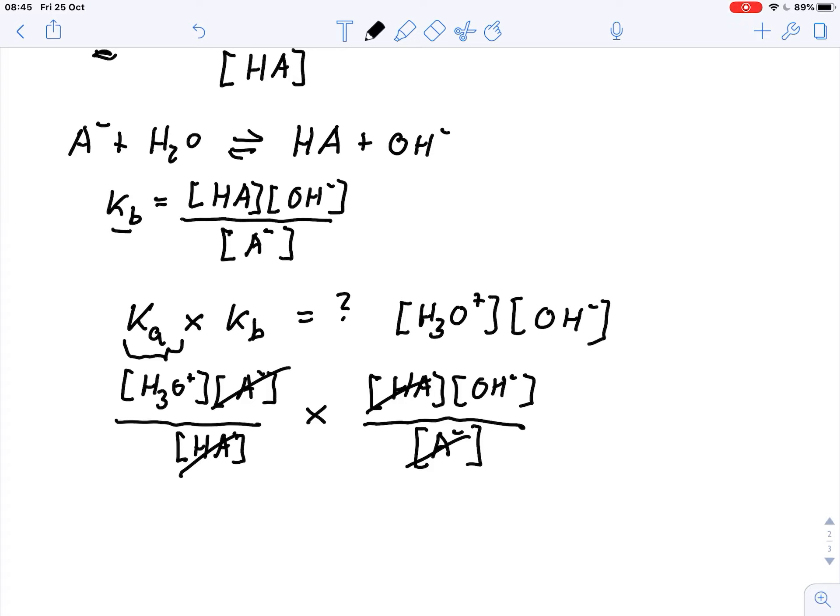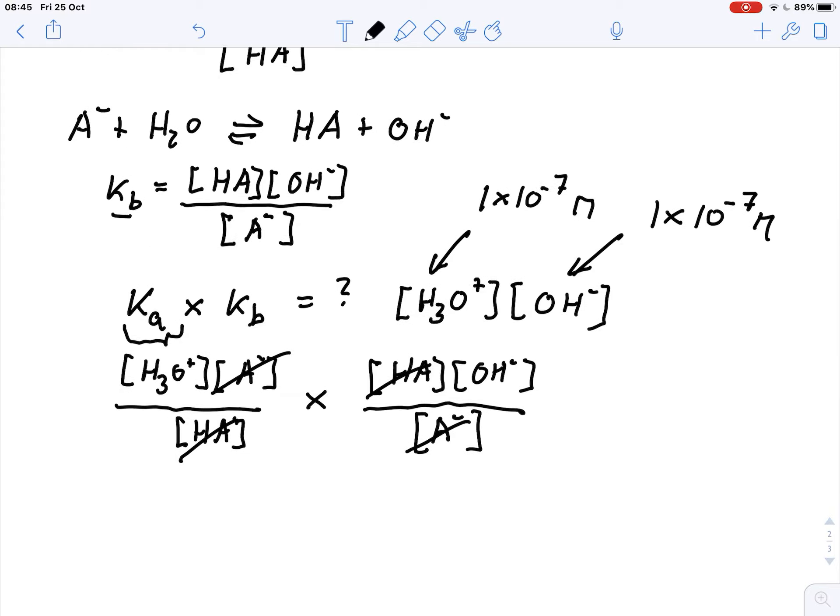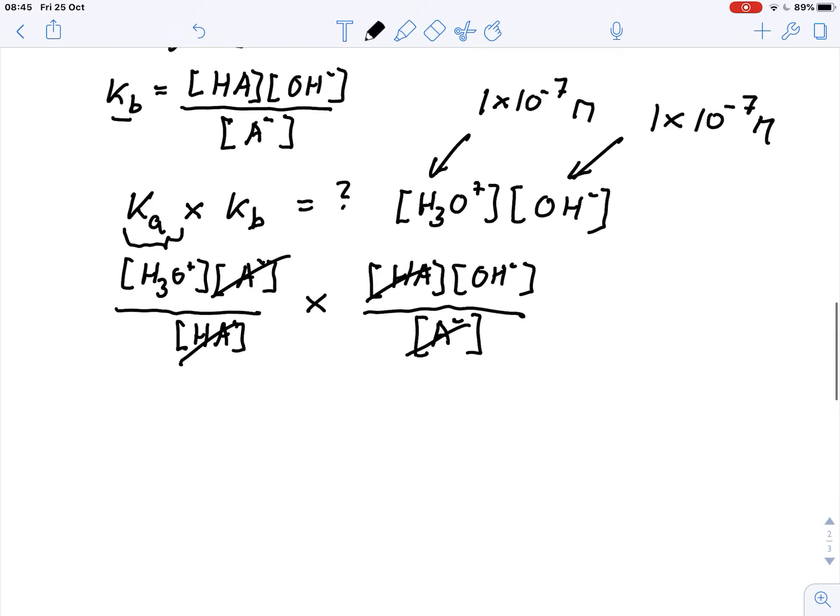Now we know that in water, in pure water, the concentration of protons is 1 times 10 to the minus 7 molar. And that is exactly the same concentration of the OH minus. So that's 1 times 10 to the minus 7 molar.